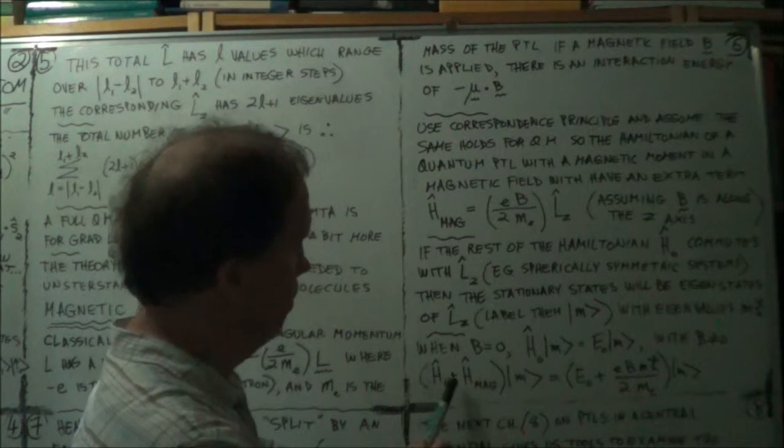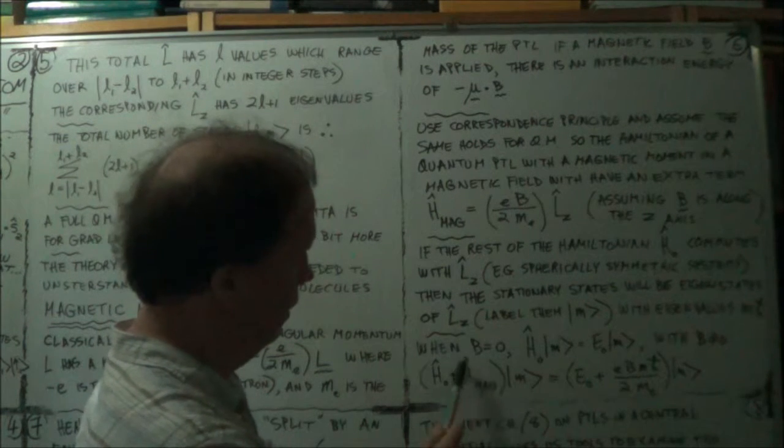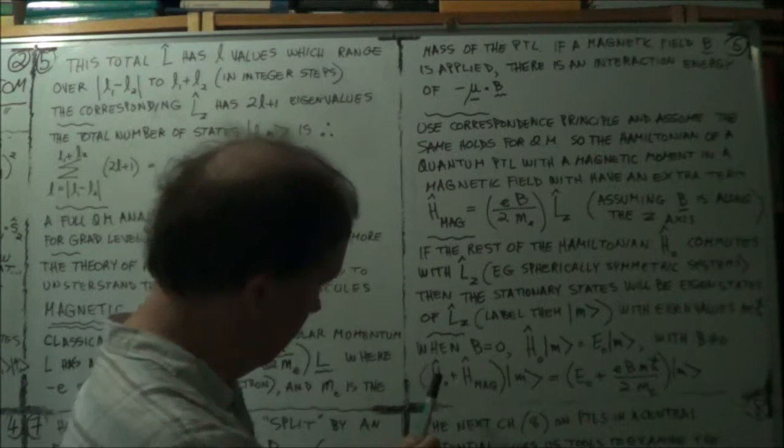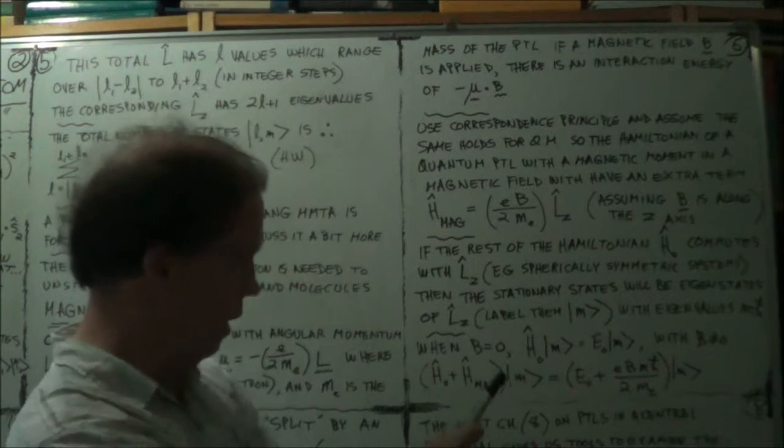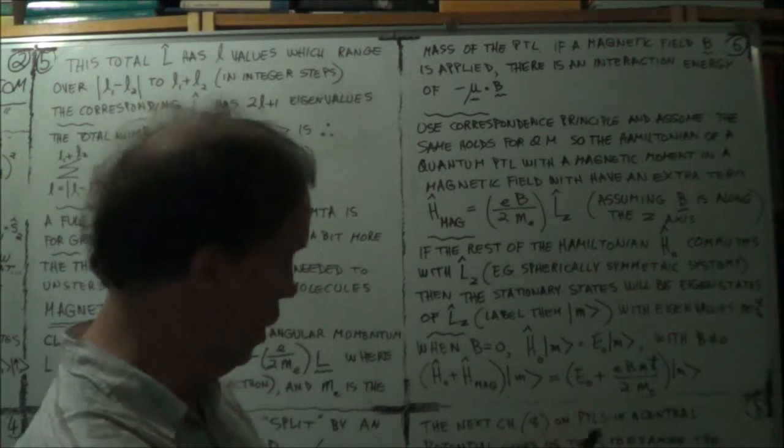So, your Hamiltonian now becomes the main part of the Hamiltonian, this one, plus a little bit. The perturbed Hamiltonian. So, this whole thing is the perturbed Hamiltonian. And that part is the perturbation. The small change.